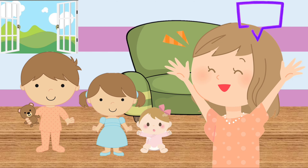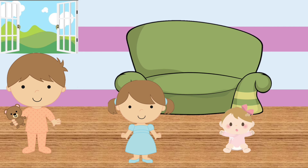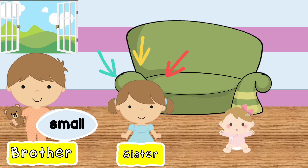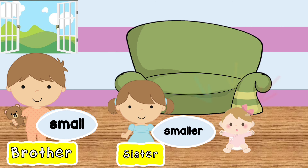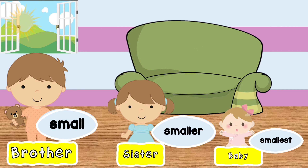The siblings then start to imagine. Brother wants to ride his blue and red jet ski and feel the fresh air on his face. Sister wants to snorkel and see the colorful underwater creatures. Baby just wants to feel the sand and build sandcastles. The siblings want to go to the beach.